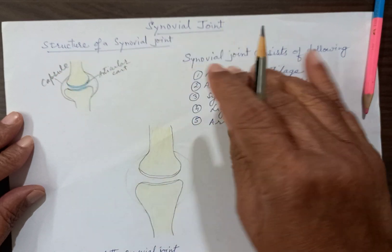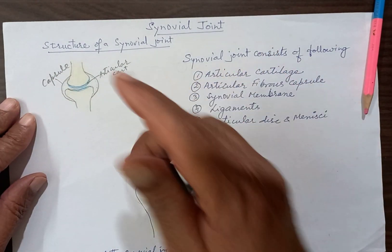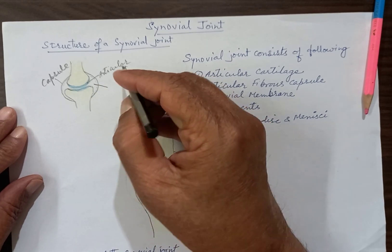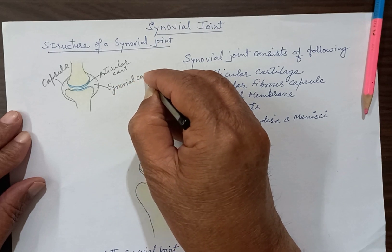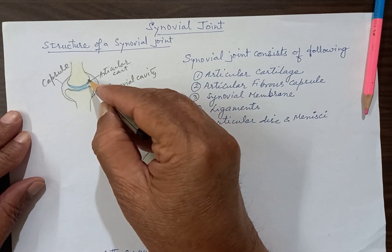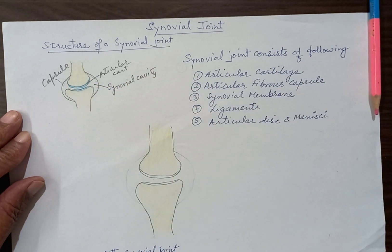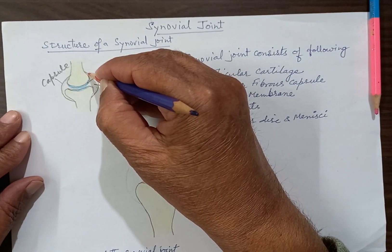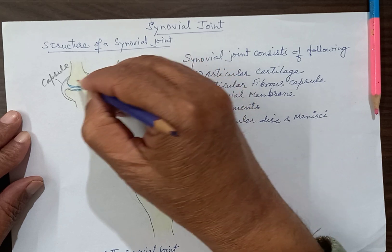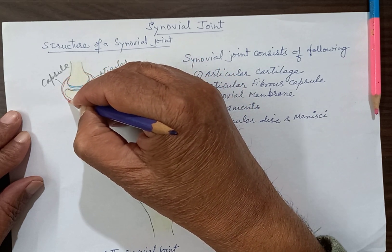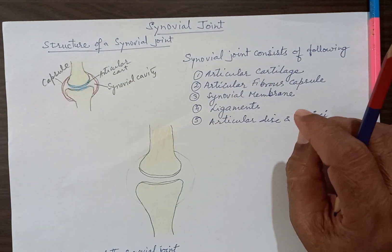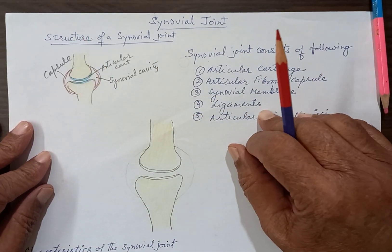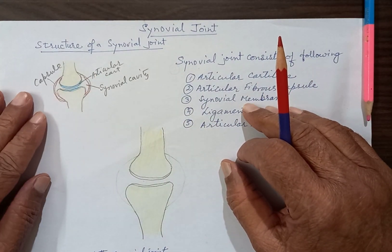Since the ends are surrounded by the capsule, there is a cavity inside called the synovial cavity. This synovial cavity is lined by a membrane called the synovial membrane. Beneath the capsule, all around it is surrounded by the synovial membrane. So this is the structure of a synovial joint, and we will learn it in detail here.